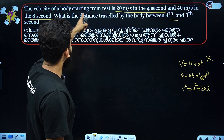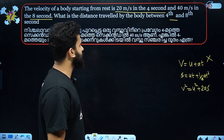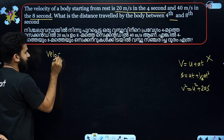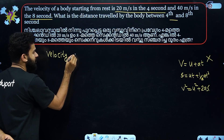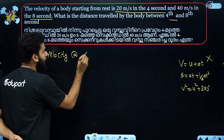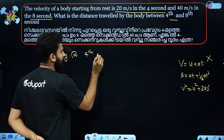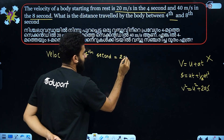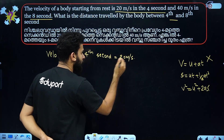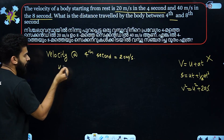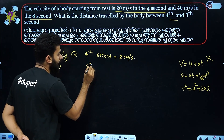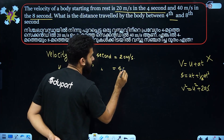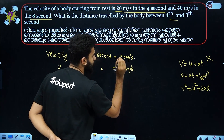If a body starts from rest and reaches 20 meters per second in 4 seconds, the velocity at 4 seconds is 20 meters per second. Then at 8 seconds it is 40 meters per second.